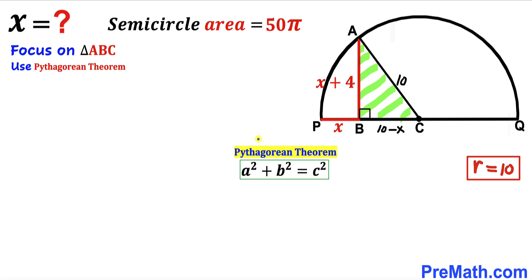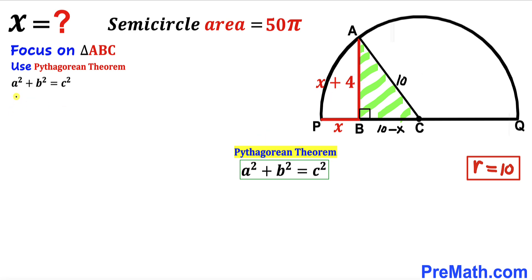Let's apply the Pythagorean theorem to triangle ABC: a squared plus b squared equals c squared. Our hypotenuse is 10, and the other two legs are 10 minus x and x plus 4. Filling in the formula: (x + 4)² + (10 − x)² = 10².